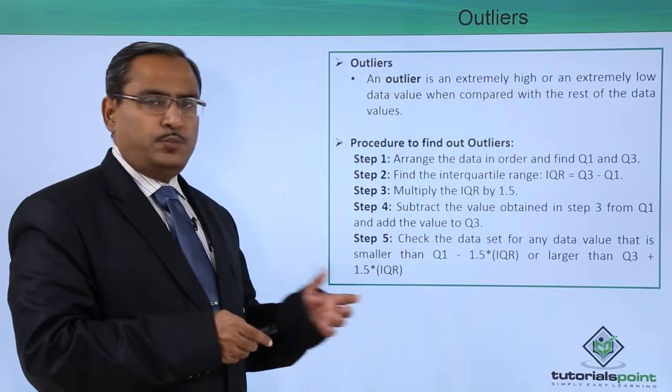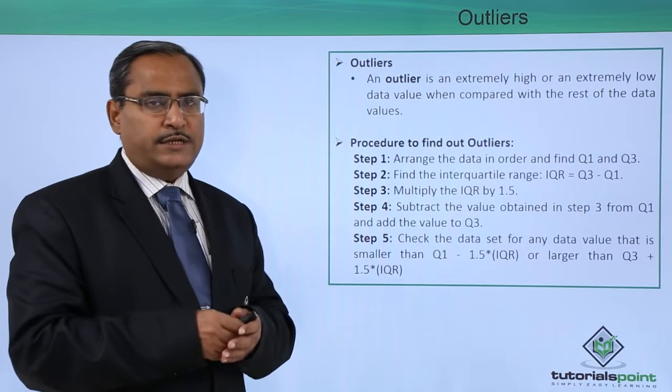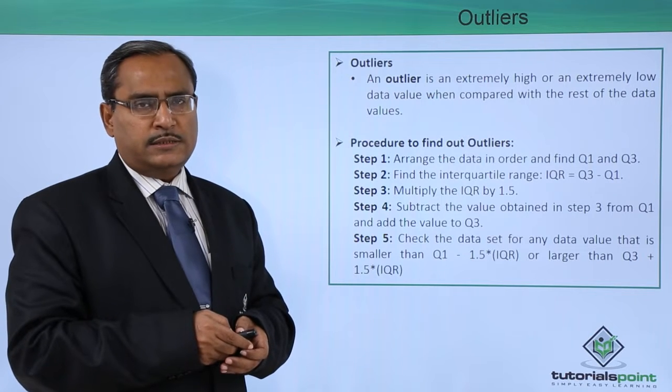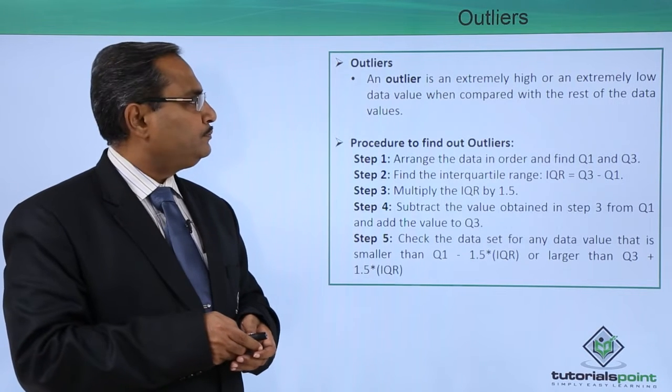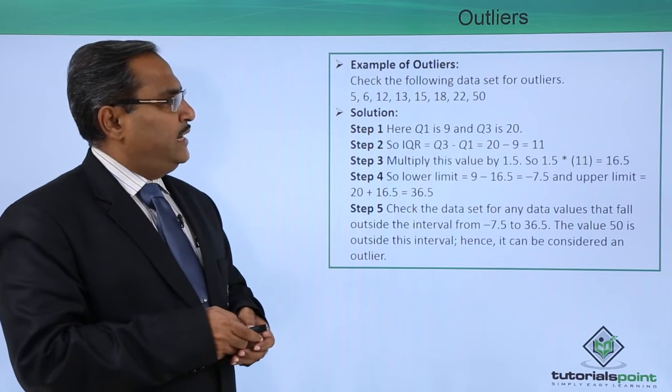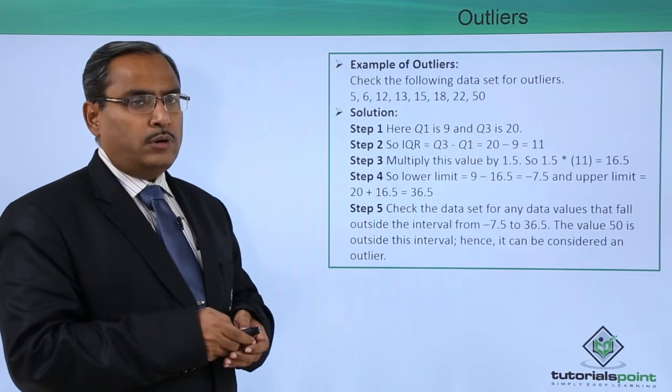Those values which will be falling beyond these ranges will be known as outliers. I think for better understanding, let's see one example. Example of outliers: check the following data set for outliers.